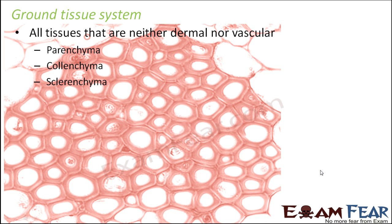Ground tissues are present almost everywhere in the plant — in roots, stems, and leaves. When we study the anatomy of root, stem, and leaves, we will actually see where such cells are present. For example in roots, parenchyma cells are present in the cortex and in the pith. In leaves, the middle layer inside the leaf is made up of ground tissue.